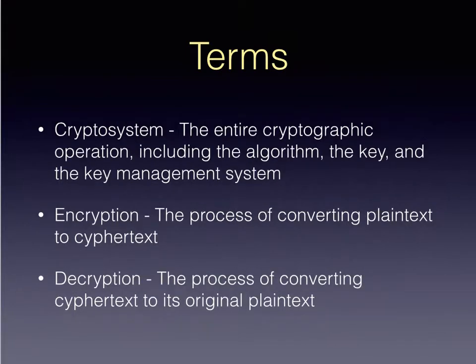A cryptosystem is the entire cryptographic operation. It includes the algorithm, the key, and the key management system. The algorithm is the program that actually does the encryption. The key is fed to the algorithm so that the output can be decrypted later only by people with the key.